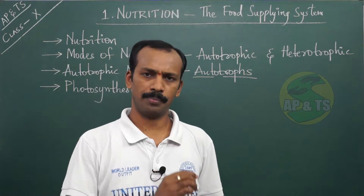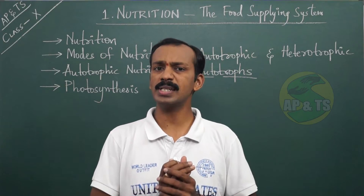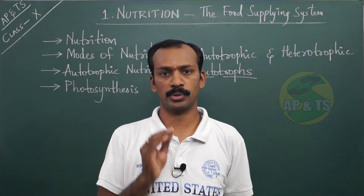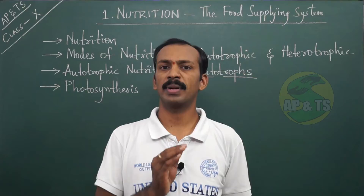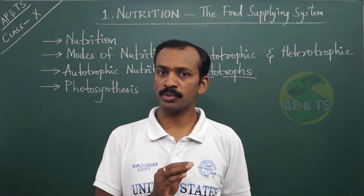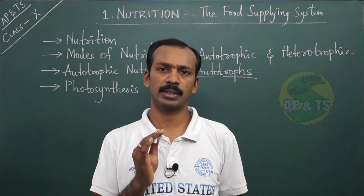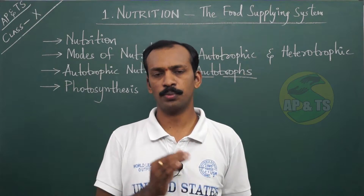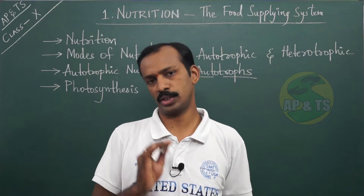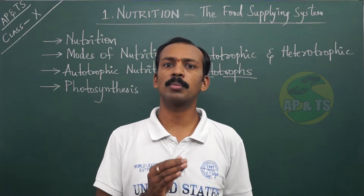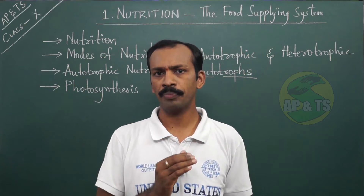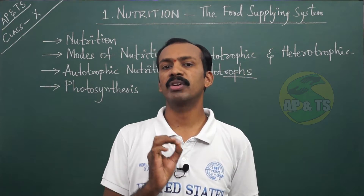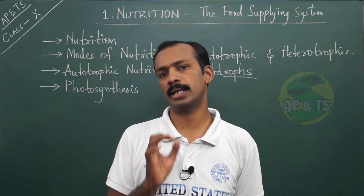Photosynthesis is a process by which autotrophs prepare their own food by utilizing carbon dioxide and water in the presence of sunlight and chlorophyll, ultimately producing two types of substances: one is food material and the other is oxygen. The food material is nothing but carbohydrate, specifically glucose. Now let us see the photosynthesis equation given by CB Van Niel.